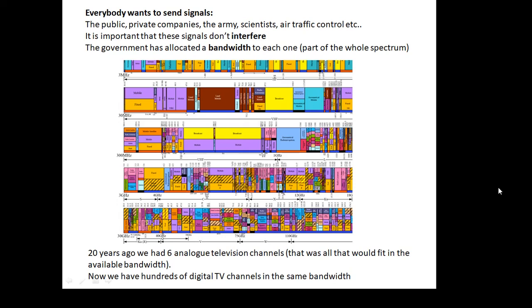Air traffic control is in a certain bandwidth that nobody else is allowed to use. The army has its own bandwidth. Amateur radio has its own bandwidth. Now, with a digital signal in the same bandwidth, you can get a lot more signals. 20 years ago, we had six analog television channels. There was only six television channels. And that was because that was all that could fit in that bandwidth. Now we have hundreds of digital TV channels, all of them fantastic quality entertainment, which uses the same amount of bandwidth.